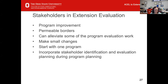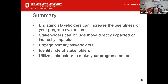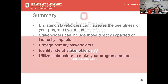If we can think about program evaluation during the program planning process, we can also think about how we will incorporate those stakeholders in both the evaluation and the program. In summary, engaging stakeholders can help you increase the usefulness of your program evaluation so the results will be used and be meaningful. Stakeholders can include those who are directly and indirectly impacted — and the largest effects can sometimes be seen among the indirectly impacted population. Remember, you don't have to include every stakeholder you come up with, but really engage those primary stakeholders purposefully, identify their role in your evaluation, and utilize them to make your programs better.